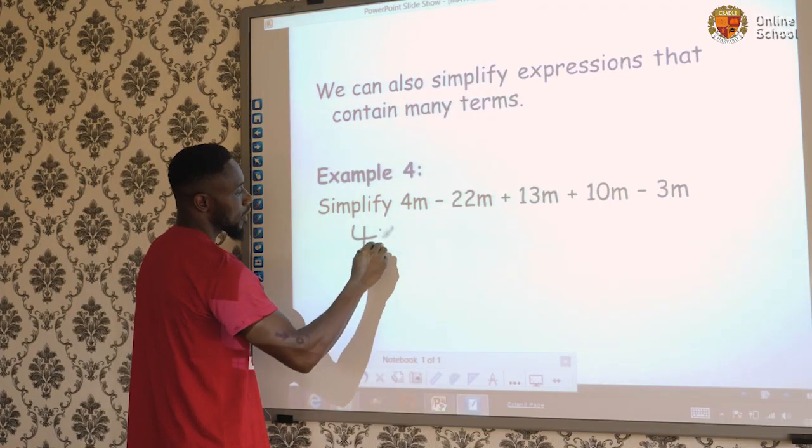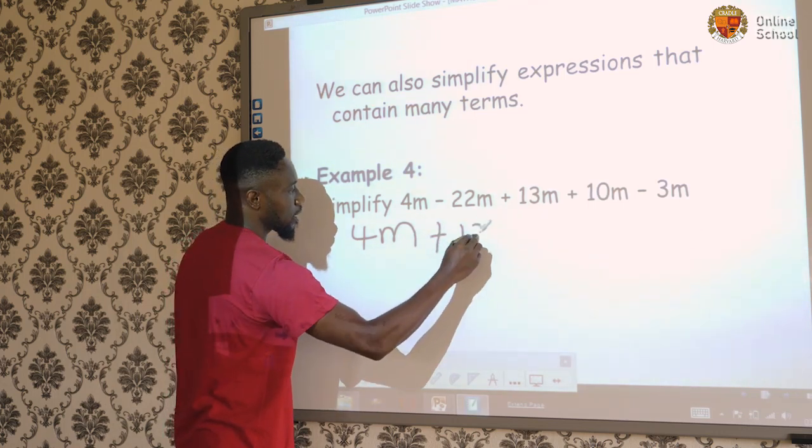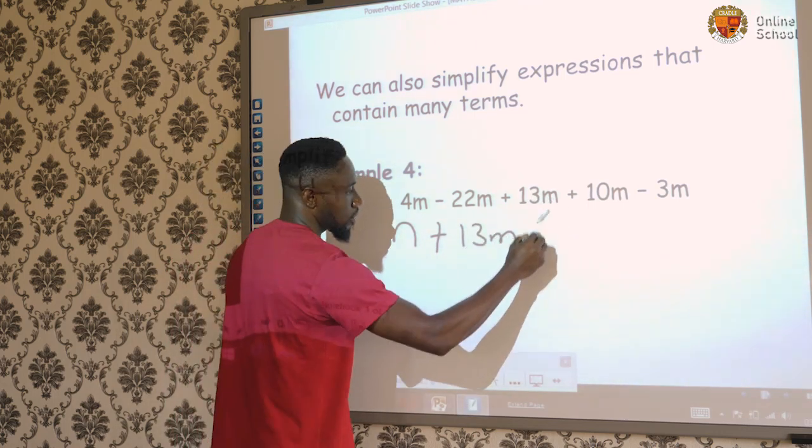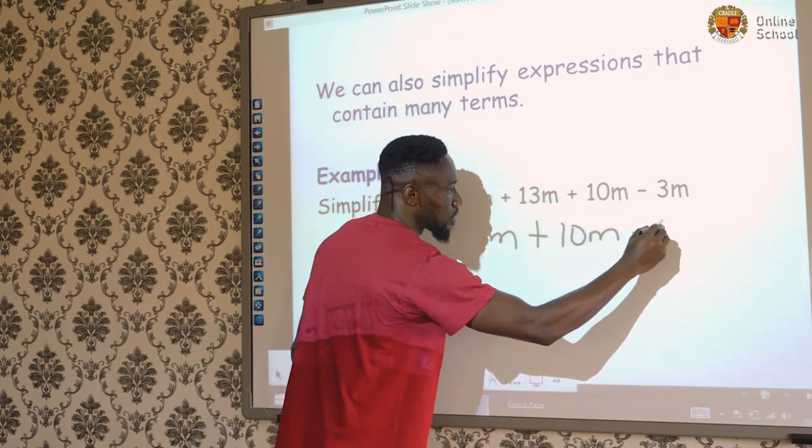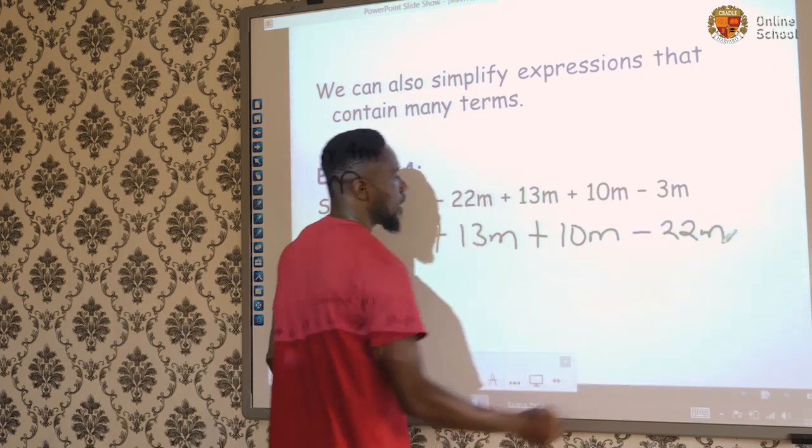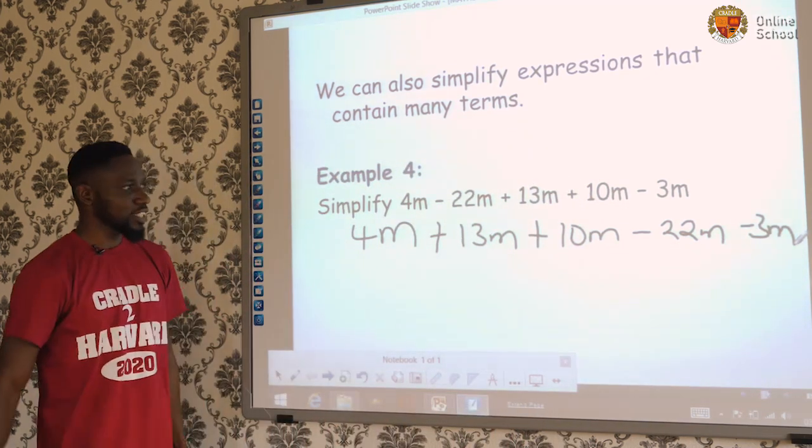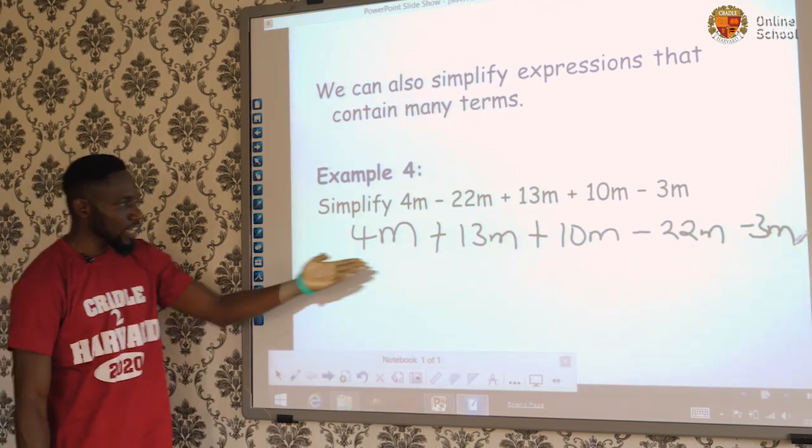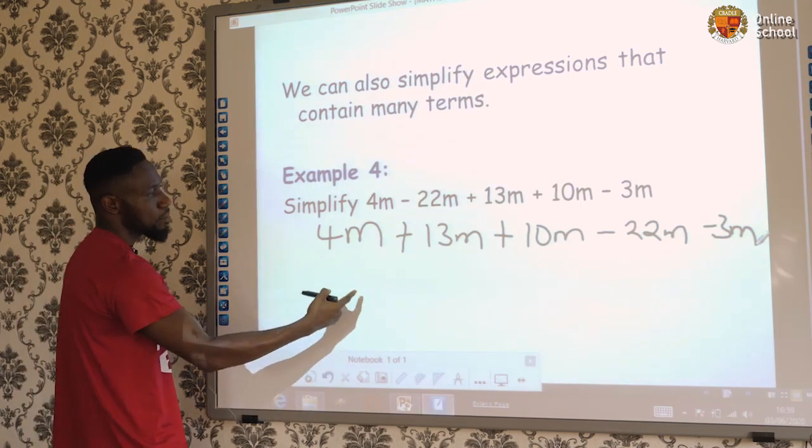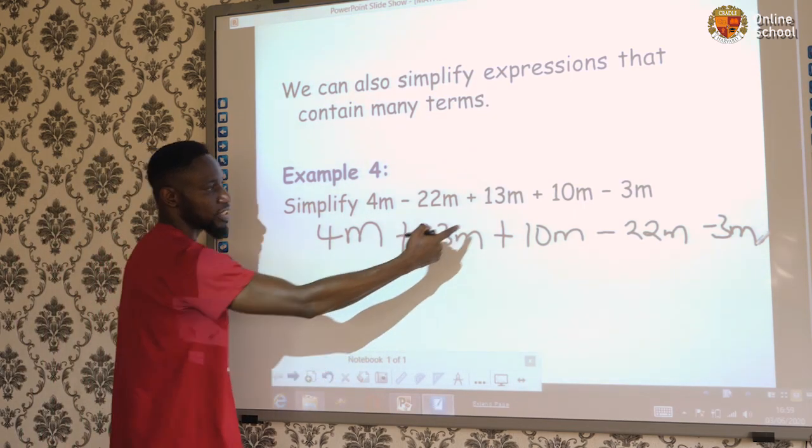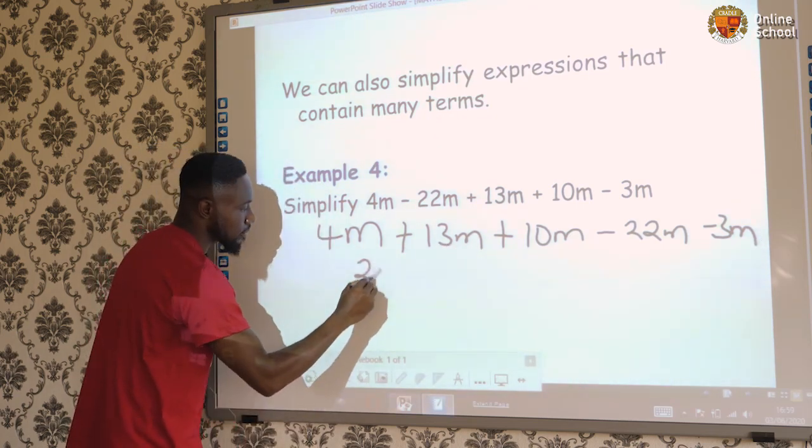So here we'll have 4m. The next one is plus 13m. We'll have plus 10m. Then we'll go to the minus. Minus 22m and then minus 3m. Now, an expression like this, we can solve for that. What do we do? We add up the positive terms together as well as we'll do the same thing to the negative term. So we'll say 4m + 13m is 17m + 10m is going to give us 27m.